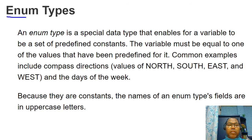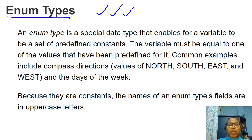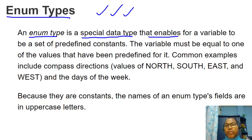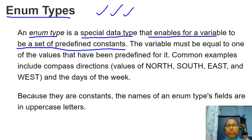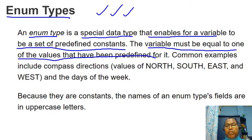Let's start with how you can declare enum types. So far we have studied primitive data types and user-defined data types like object and reference data types. Similarly, you have another data type known as enum. Enum is a special data type that enables a variable to be set to a predefined constant. This is generally used to define a variable whose set of values you know in advance.